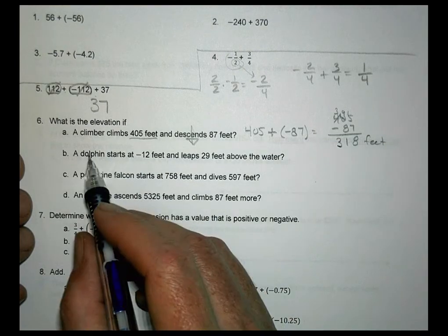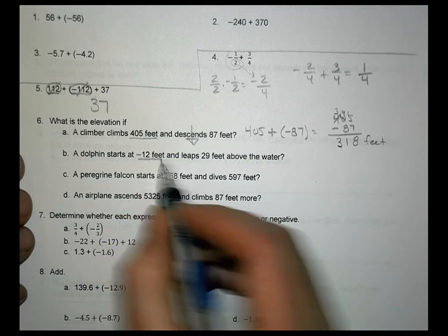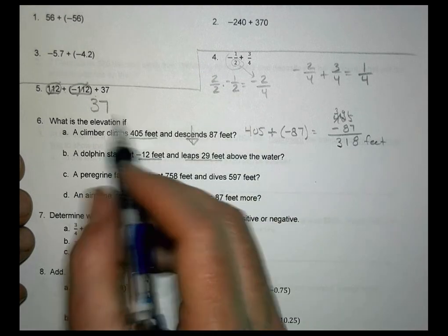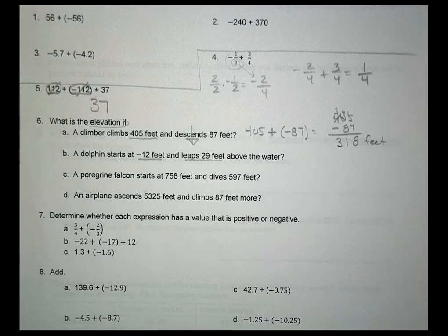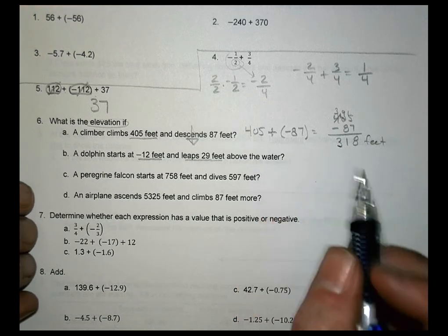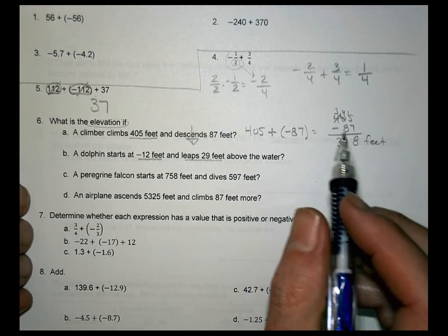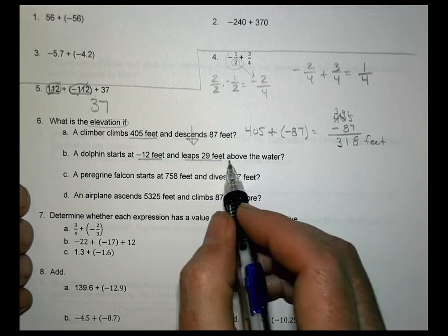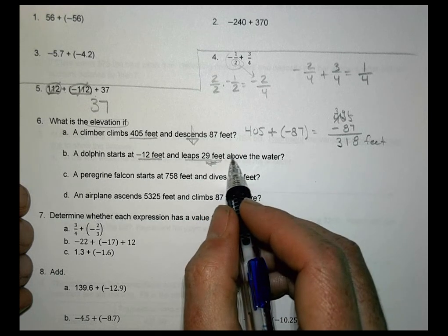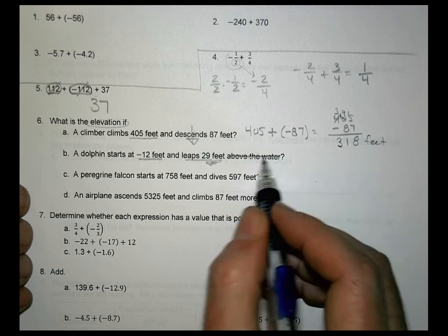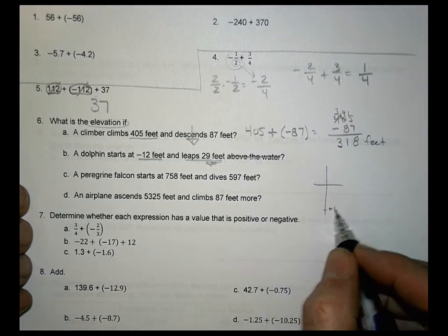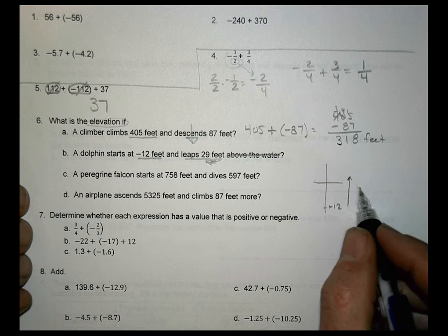And that's a good one there. For B, it says a dolphin starts at negative 12 feet and leaps 29 feet above the water. So we want to find the elevation. I'm guessing we want to find the elevation for how far he is above the water. Well, here's the thing. If he leaps 29 feet above the water, then that is his ending elevation. So I think what I saw happening was we just said he leaps 25 feet, and we just crossed that part off and say, all right, we're going to be down here at negative 12, and then we're going to go up 29 feet.